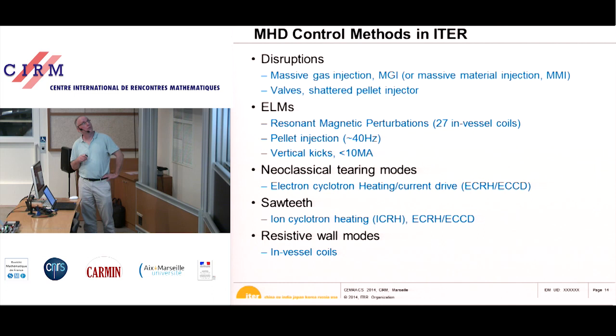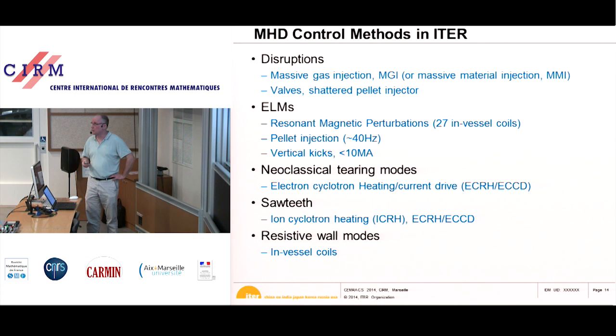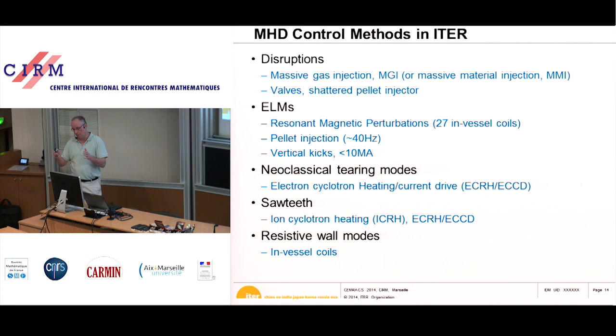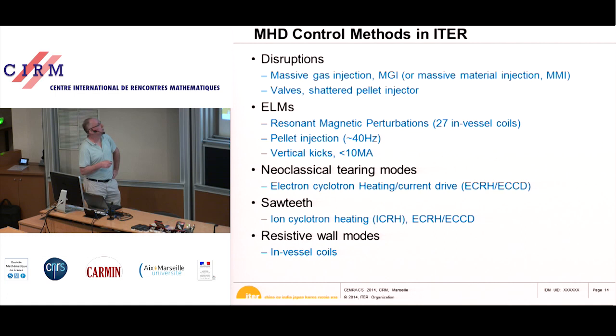Another way to control ELMs is by injecting small pellets — up to 1 cubic millimeter — at high frequency, which makes the ELMs smaller and more frequent so each one is small enough. Vertical kicks — making the plasma oscillate up and down by a few centimeters — can also control ELMs. This can be applied at low plasma current during initial ITER operation, but not in the full operational phase.